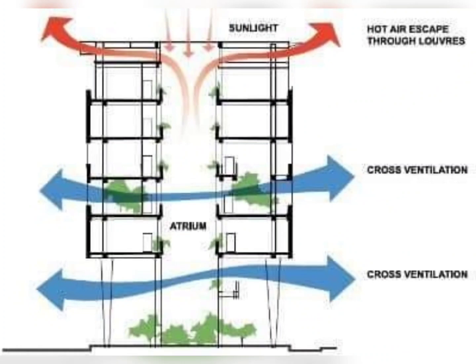This image illustrates a multi-level ventilation strategy, combining natural and mechanical methods for optimal air circulation and temperature control. Cool air enters through lower openings, while warm air escapes from the top, creating a natural upward airflow. A central atrium and mechanical systems further enhance ventilation, ensuring a comfortable and healthy indoor environment.